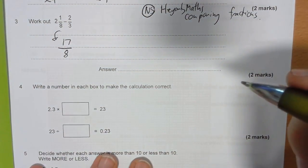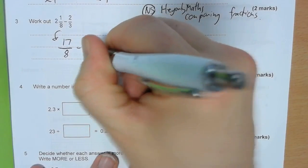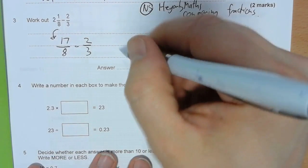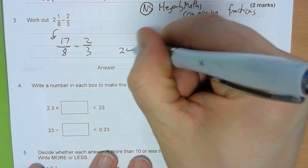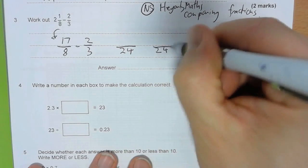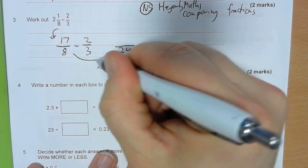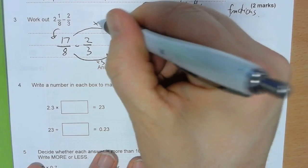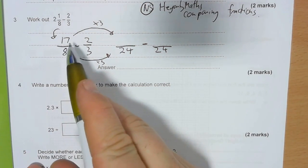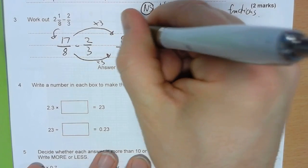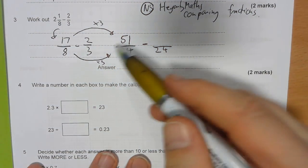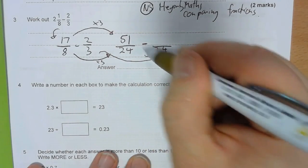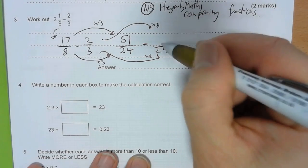And then I'm going to take away two-thirds. And now I need to use my equivalent fractions where I'm going to convert them all to out of 24. So, I've got something out of 24, take away something else out of 24. 8 times by 3 gives me 24, so 17 times by 3. Well, 10 times 3 is 30, 7 times 3 is 21, so that's 51 out of 24. And 3 times by 8 is 24, so 2 times by 8, which is 16.